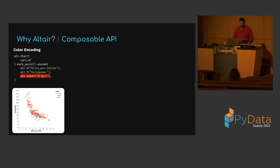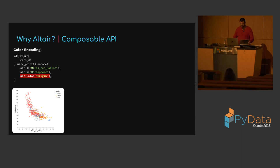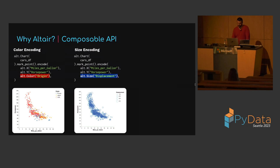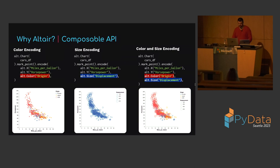Next I'm going to talk about composability. In the context of Altair, if you know how to accomplish feature A and feature B, you can be confident that you can combine these two features together and Altair will do the right thing. In the left column we have a scatter plot colored by country of origin — Altair automatically adds a color legend. In the center column, points are sized based on engine displacement. Composability means combining both color and size encodings works correctly, with both legends nicely laid out.